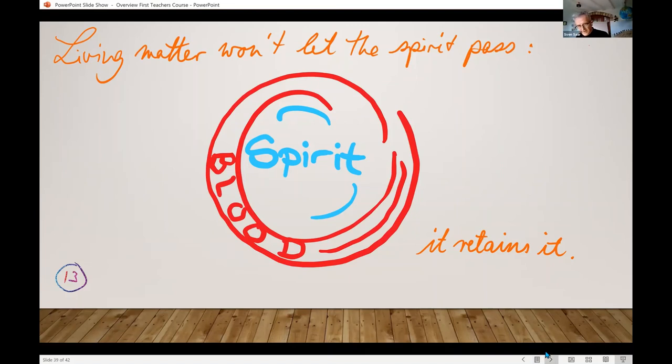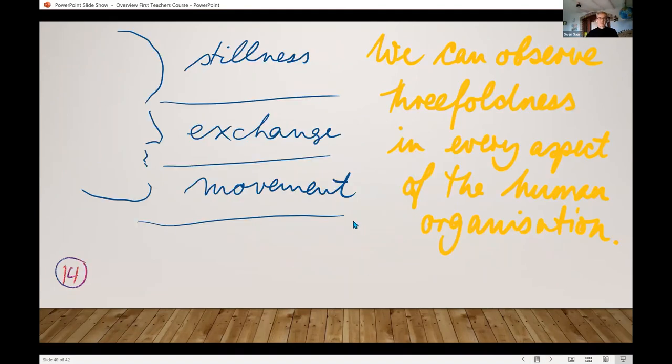In the final lecture, Steiner comes back once more to this threefoldness of the human aspect. He says, actually, you'll find that everywhere. The head is still and the brain sits in it. The spirit sits in it like a person driving in a railway carriage. This part of us has an exchange between stillness and movement. And the limbs move all the time. Actually, the same is true for the shoulder, the arm and the hand. For the hips, the leg and the foot. For the face, the forehead, the sense organs and the jaw. You find this threefoldness absolutely everywhere. And it really informs and illustrates the spiritual nature of the physical human being.